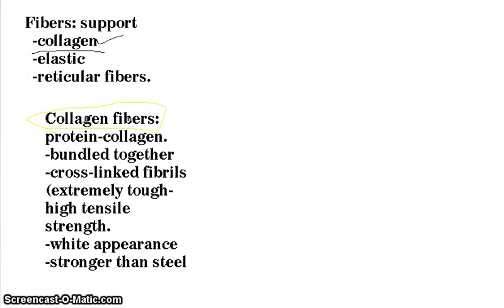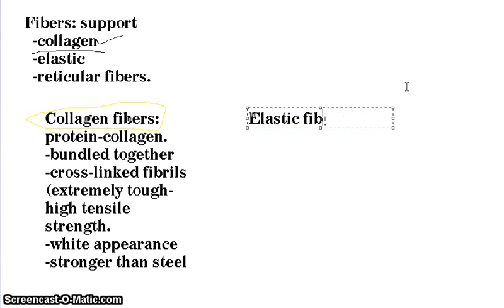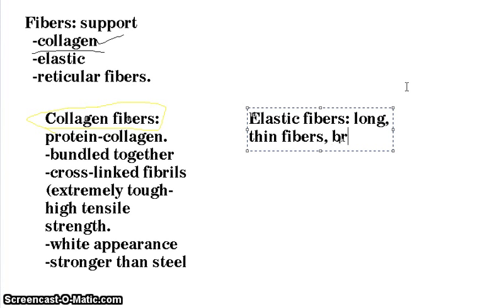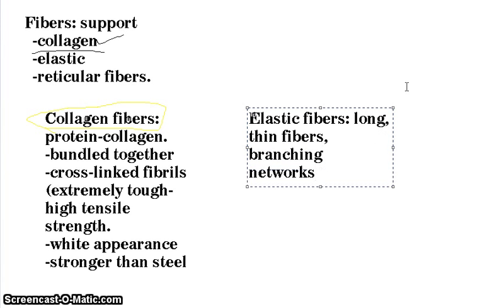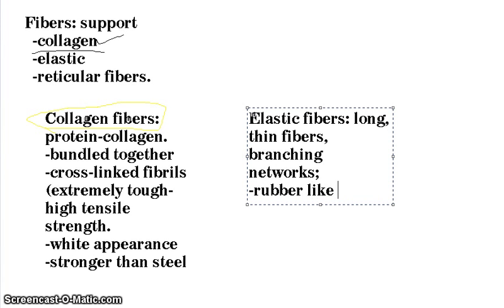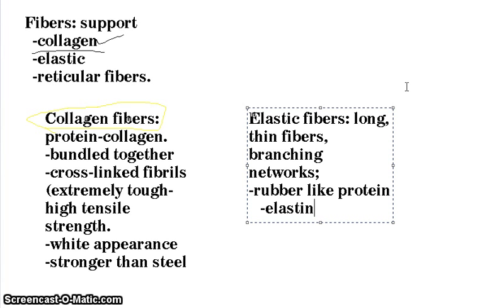The next type is elastic fibers. Elastic fibers are long, thin fibers that form branching networks in the extracellular matrix. These fibers contain a rubber-like protein called elastin.